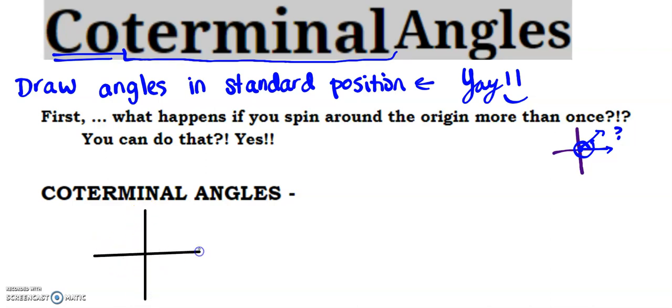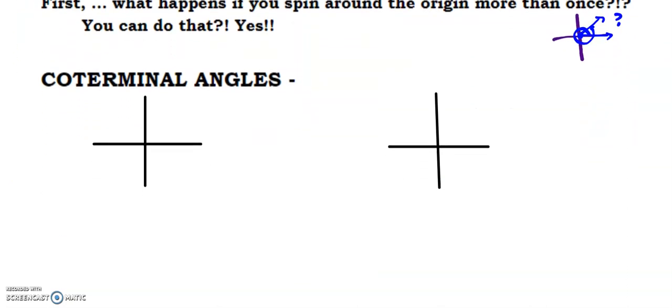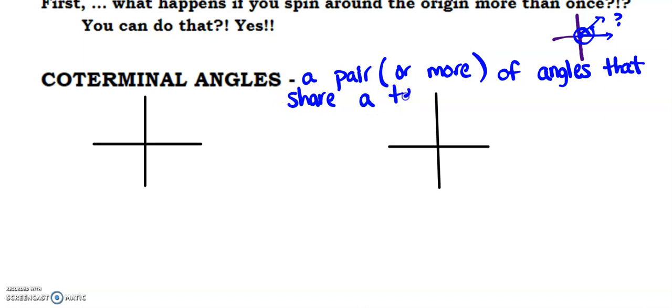So I'm going to start by just giving you kind of two examples to take a look at, okay? And then we'll do a bunch of practice, all right, to hopefully solidify this idea. So first off, let me just start off by saying the definition of what a coterminal angle is. And a coterminal angle is a pair or more, because there really are many, of angles that share a terminal side. So let me draw you an angle for starters.